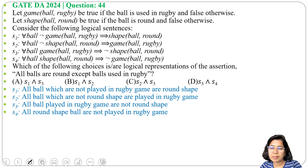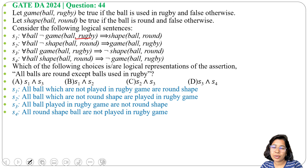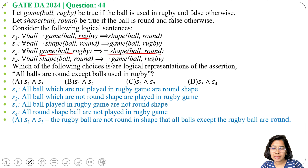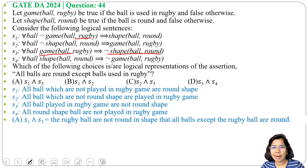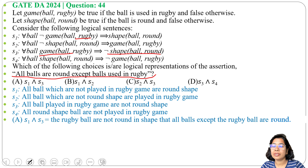Option A is S1 conjunction S3. S1 states: for all balls, if that ball is not played in game rugby, then it is round. S3 states: for all balls, if that ball is played in game rugby, then it is not round. Together, S1 and S3 say exactly the same thing as the given statement: 'All balls are round except balls used in rugby.' So option A can be an answer.